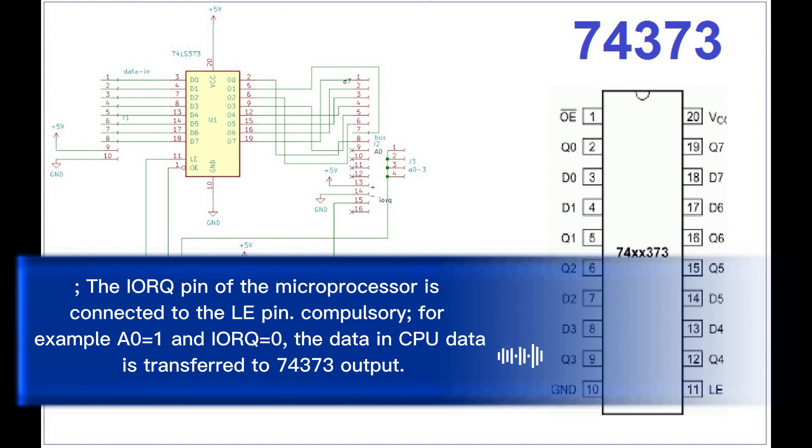For example, when A0 equals 1 and IORC equals 0, the data in CPU data is transferred to 74373 output.